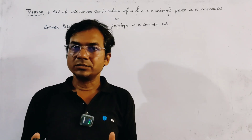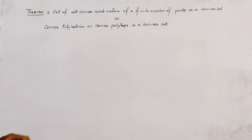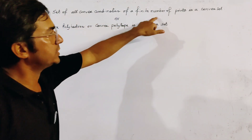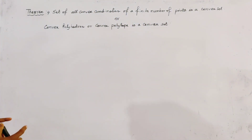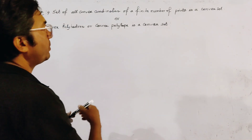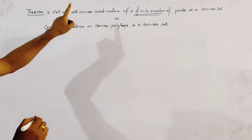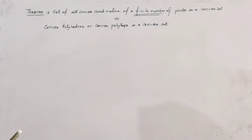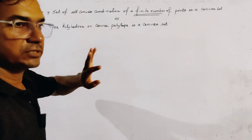We are going to discuss the proof of an important theorem on convex sets. The statement of this theorem is: the set of all convex combinations of a finite number of points is a convex set. The set of all convex combinations of a finite number of points is known as a convex polyhedron or convex polytope. So this theorem can also be stated as: a convex polyhedron or convex polytope is a convex set.